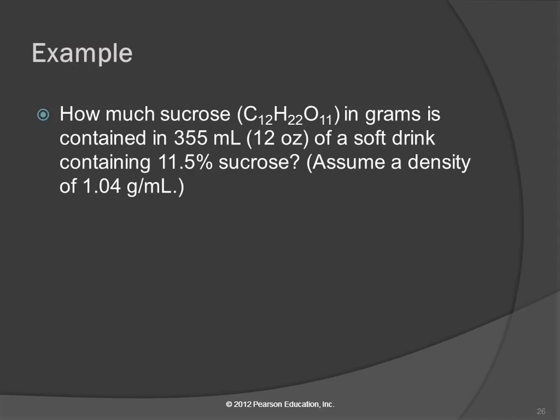So if we look at this, how much sucrose in grams is contained in 355 milliliters of a soft drink containing 11.5% sucrose? And here again, they're giving us the density. So this is a 12-ounce can. That's the English unit. So that was just kind of for our information. This is the number we're going to use. So let's write out some of these numbers.